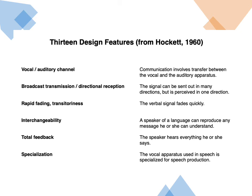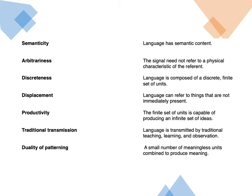Moving to the second set of features — this is where things start to diverge from what we've seen Kanzi do and what the bees do. First, language has semantic content. This differs from the bees because what they're doing is very direct — there isn't a semantic content or meaning in the same sense. It's probably clear that Kanzi does have some semantic content: Kanzi knows the difference between chopping onions and chopping peppers.